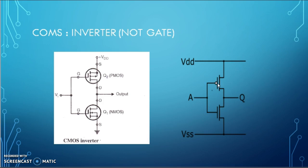This bubble will indicate the gate of PMOS terminal, PMOS MOSFET. And this without bubble MOSFET is NMOS. A is the input and Q is the output.